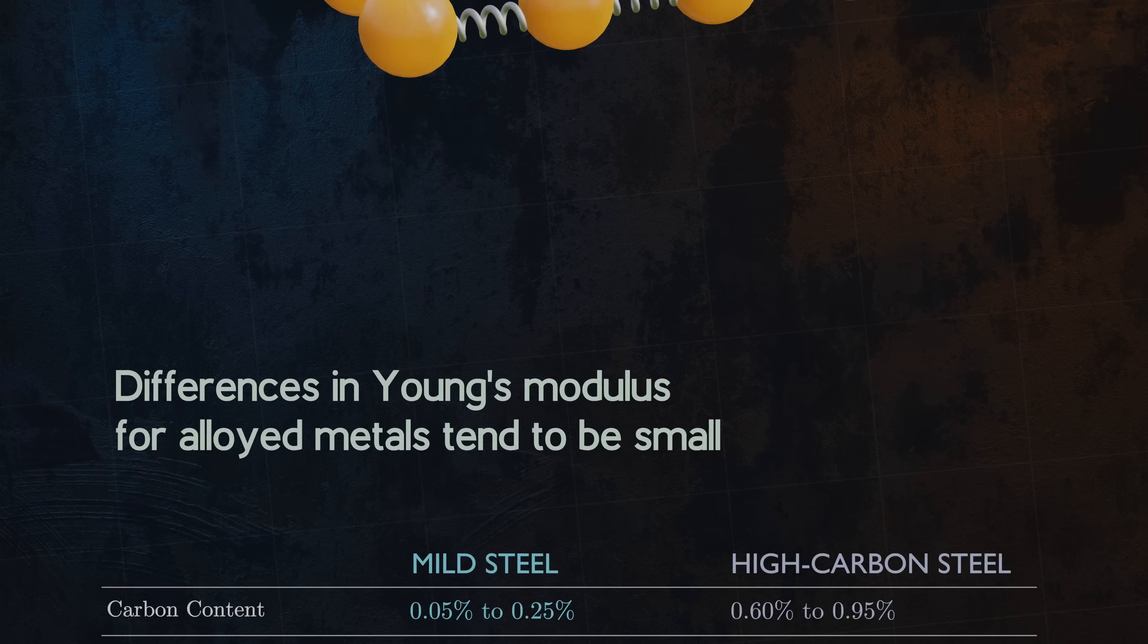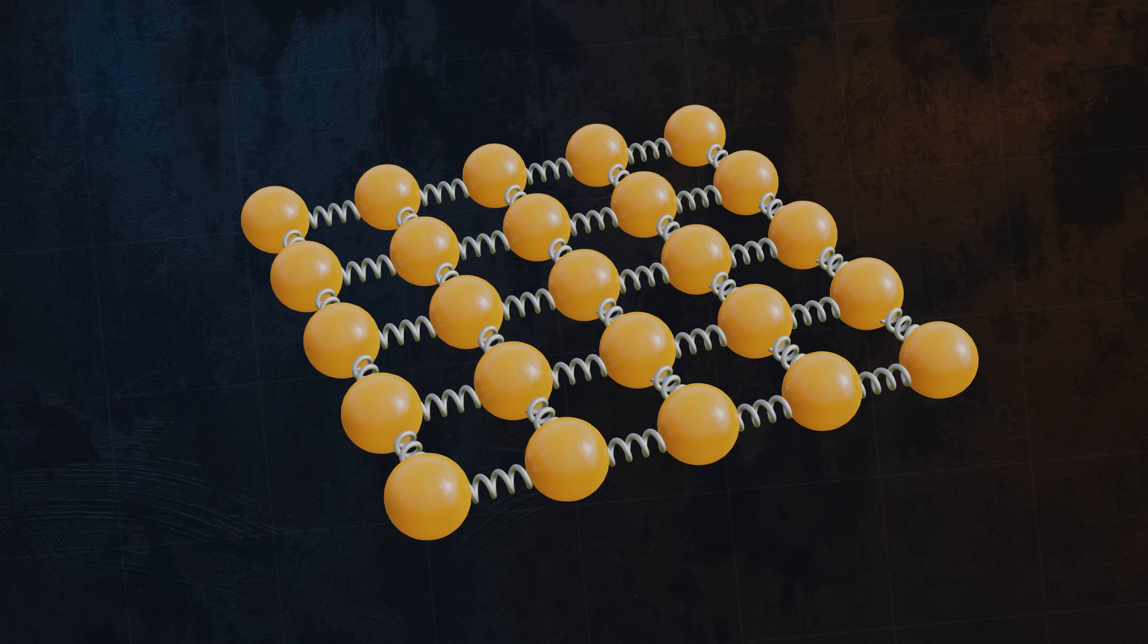We can explain it using our interatomic bonds model. Mild steel has a carbon content of up to 0.25%, and high carbon steels can have a carbon content of up to 0.95%. Adding such a small number of additional carbon atoms to the existing iron atoms isn't enough to significantly affect the overall resistance to increasing the spacing between atoms. And so the Young's modulus is very similar for mild steel and for high carbon steel, the other mechanical properties being very different.